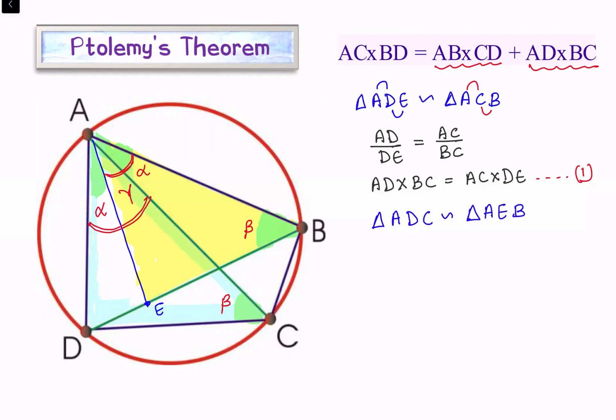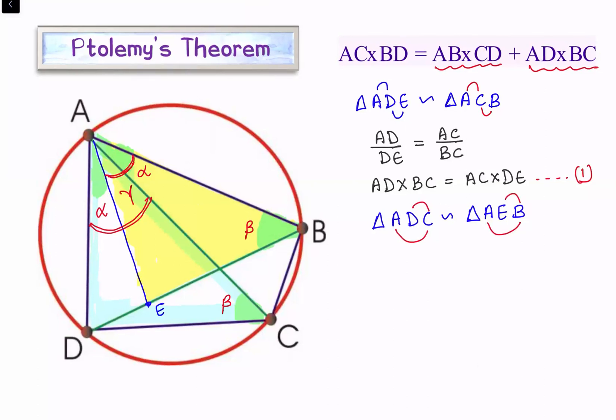So ratio of sides—let's check which side we need. We need AB and we need BE. So here we'll take AC and DC.